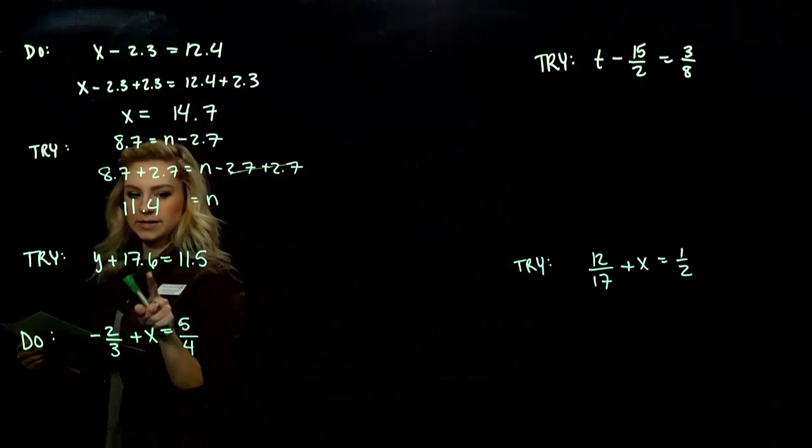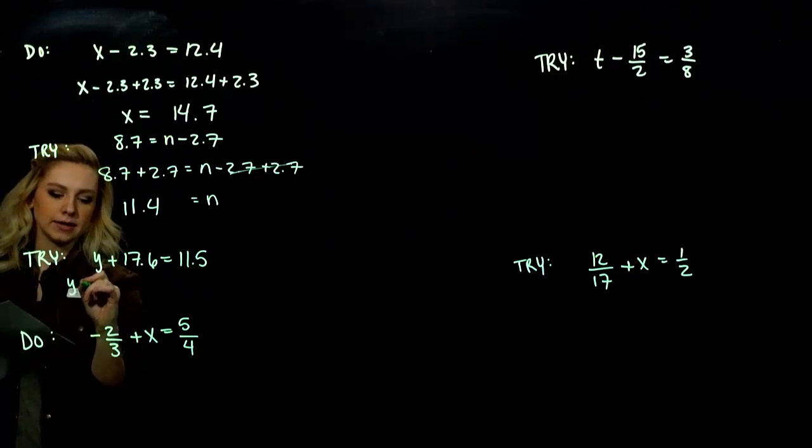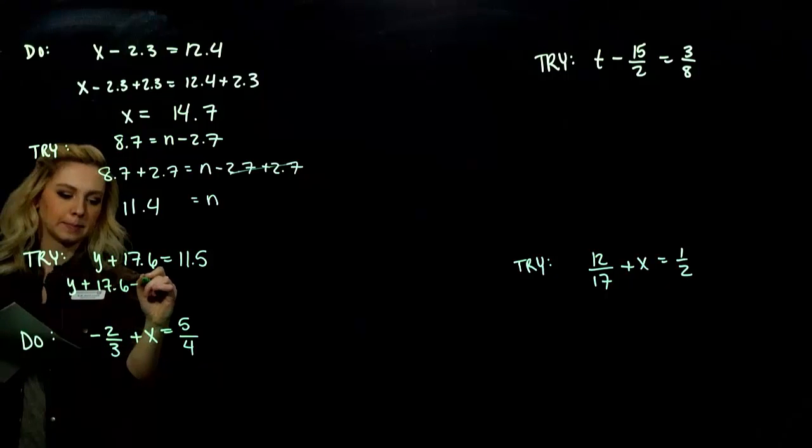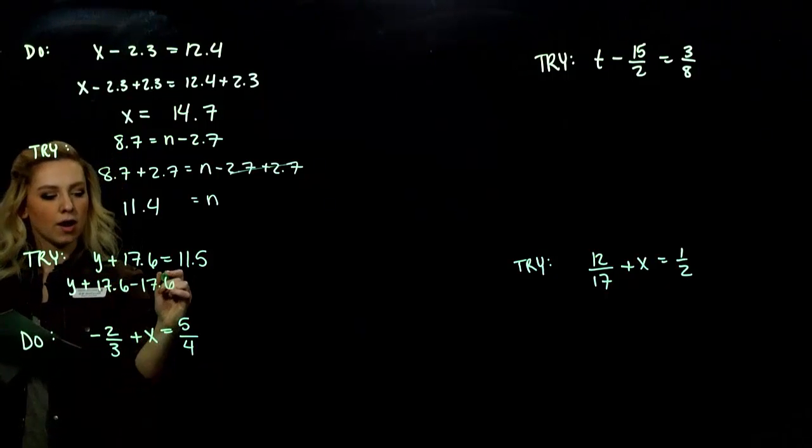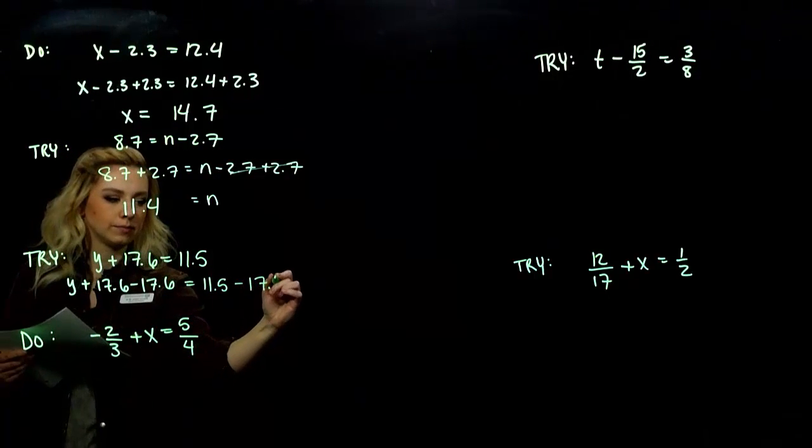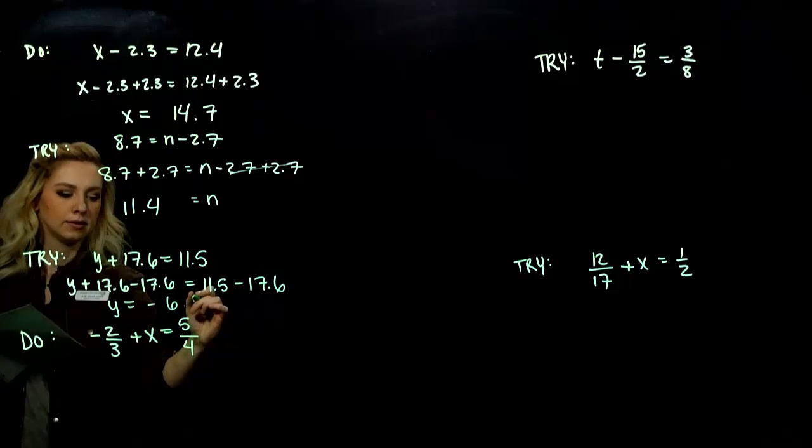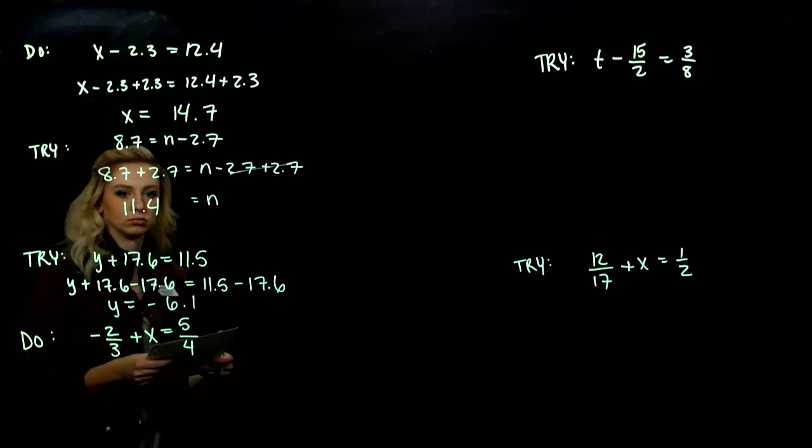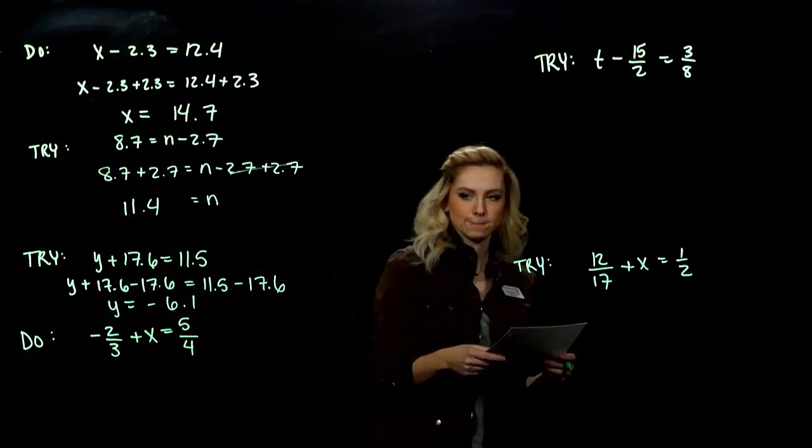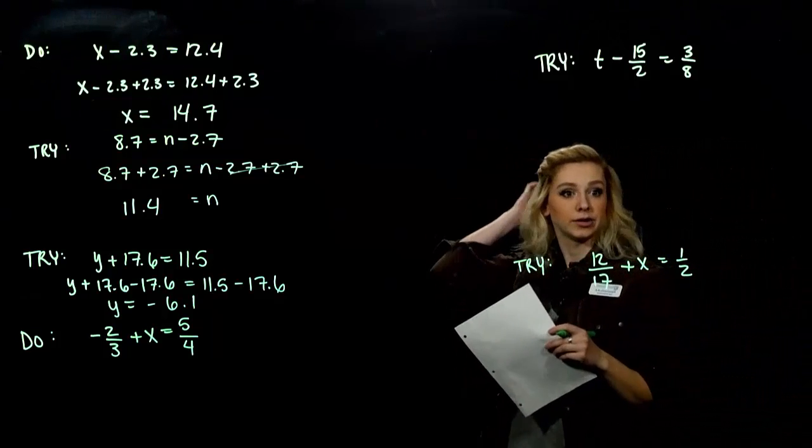For the second try, what had to happen? We have to subtract 17.6 from both sides. Because we're undoing them, trying to get y on its own. So, when you do that subtraction, what are you left with? Negative 6.1. Okay. So, decimals aren't so bad. We just line them up, do the subtraction, or do it in your head.